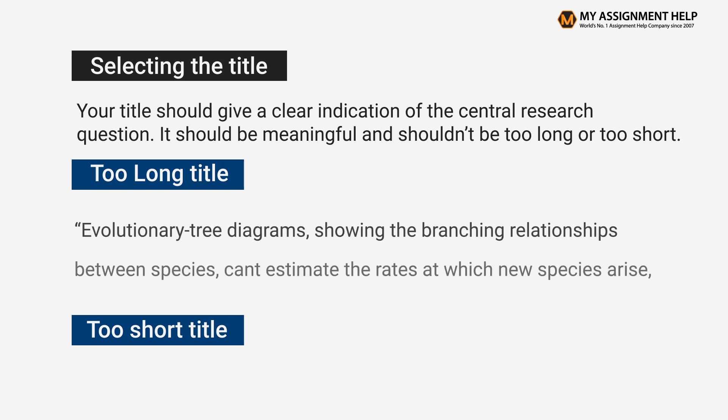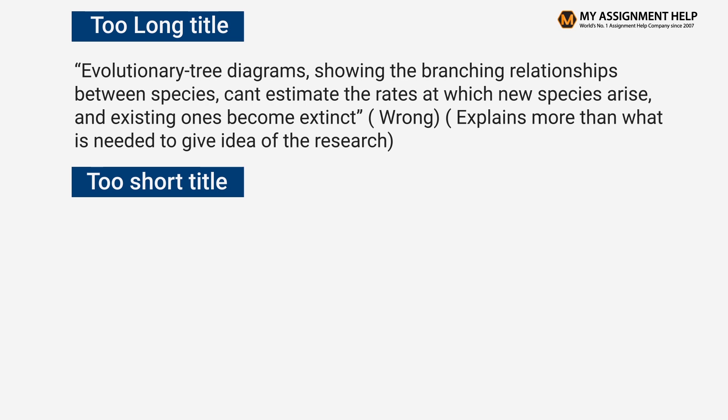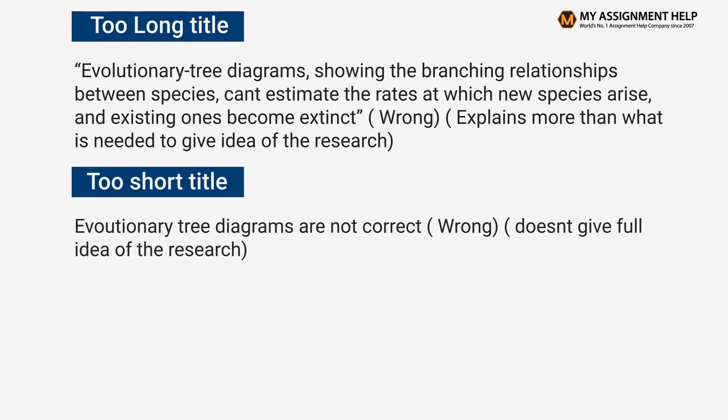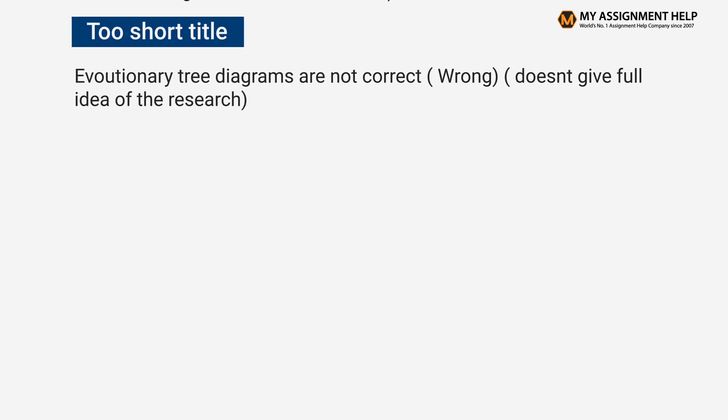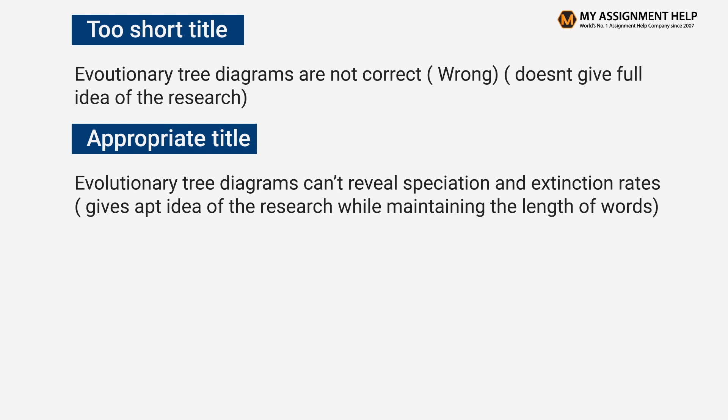Too long title example: 'Evolutionary tree diagrams, showing the branching relationships between species, can't estimate the rates at which new species arise and existing ones become extinct.' This is wrong — it explains more than what is needed. Too short title: 'Evolutionary tree diagrams are not correct.' This is also wrong — it doesn't give a full idea of the research. Appropriate title: 'Evolutionary tree diagrams can't reveal speciation and extinction rates.' This gives an apt idea of the research while maintaining a moderate word length.